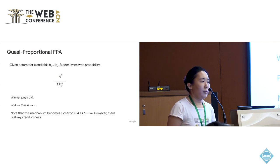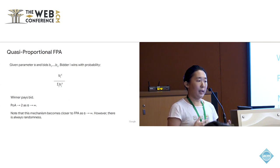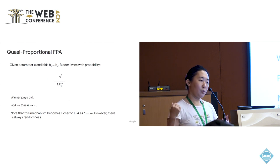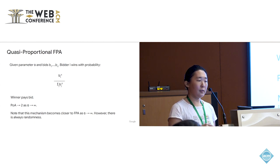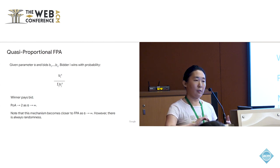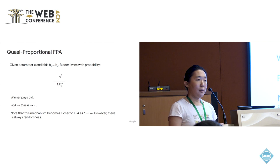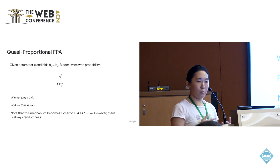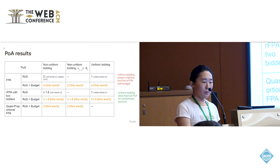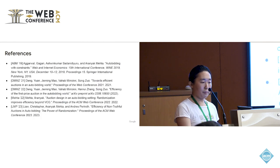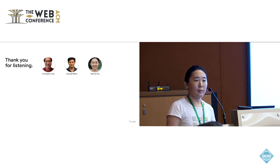Finally, we propose a quasi-proportional mechanism with parameter alpha, where each query is allocated to each bidder proportionally to their bid raised to the power of alpha. We show that POA approaches one as alpha approaches infinity. Note that as alpha approaches infinity this mechanism becomes very close to first price auction, but it's not the same because there is always randomness in it. This concludes our work. Thank you — happy to take questions.